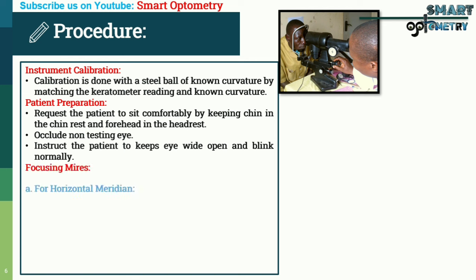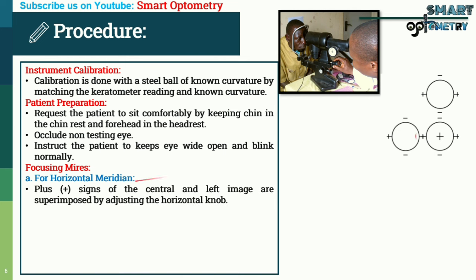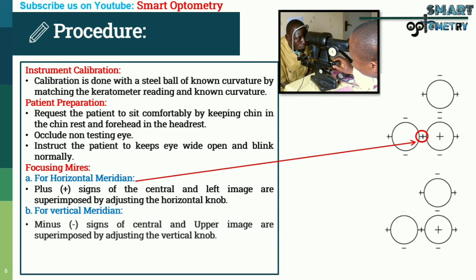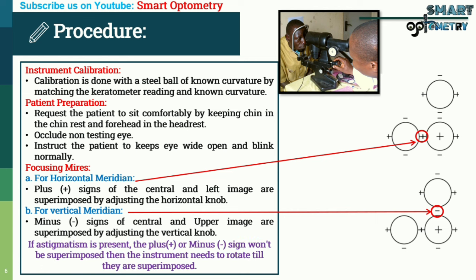Focusing mires: for the horizontal meridian, the plus sign of the central and left image are superimposed by adjusting the horizontal knob. For the vertical meridian, the minus sign of the central and upper image are superimposed by adjusting the vertical knob. If astigmatism is present, the plus and minus signs won't be superimposed, and the instrument needs to be rotated until they are superimposed.